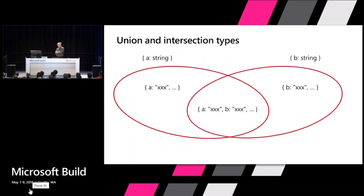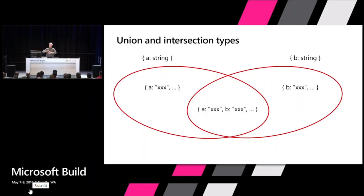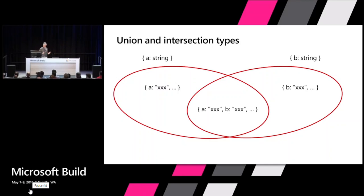We also have intersection types, which are in a sense the opposite of union types. If we have two types — a colon string and b colon string — when you define an object type a colon string you're really saying this is any object that has a property named a of type string, with some other unconstrained set of properties. You're dealing with an infinitely large number of possible objects. The same goes for b. Intersection types give you those objects that have both an a and a b.